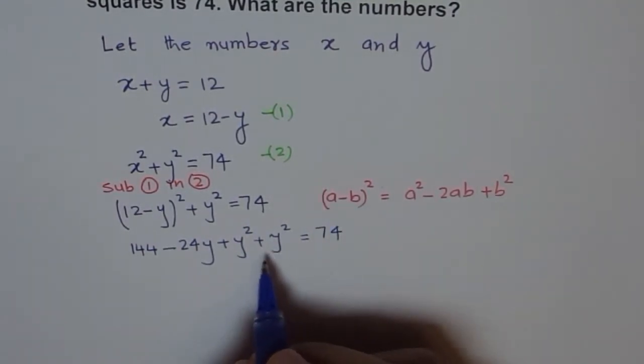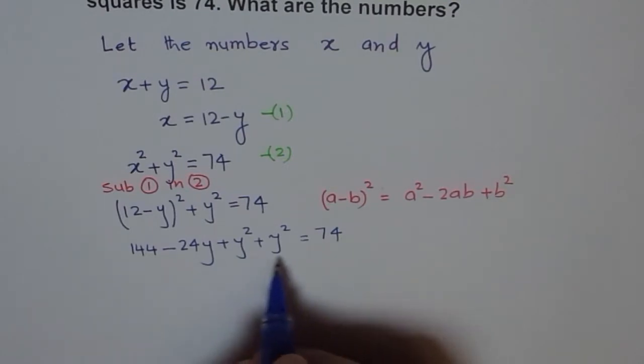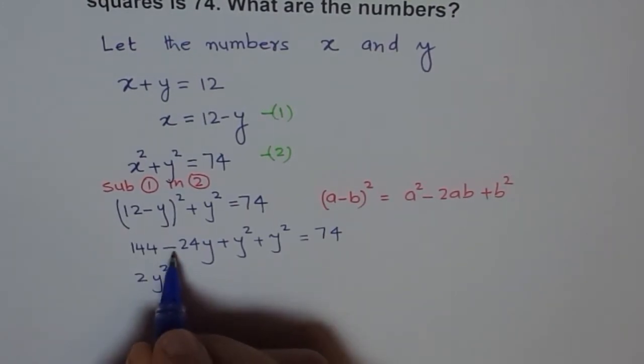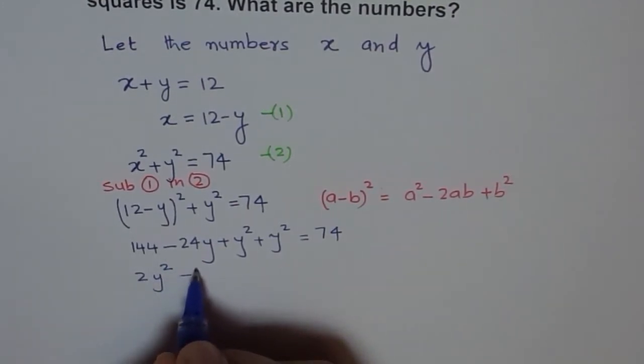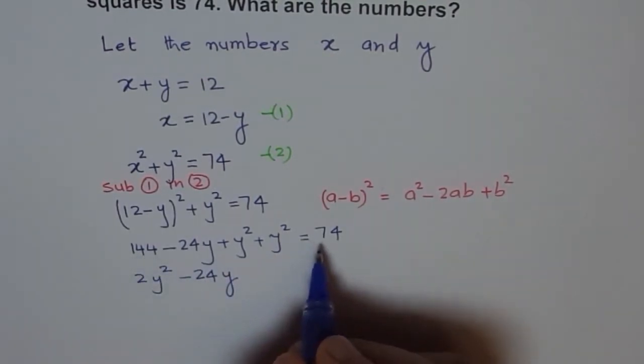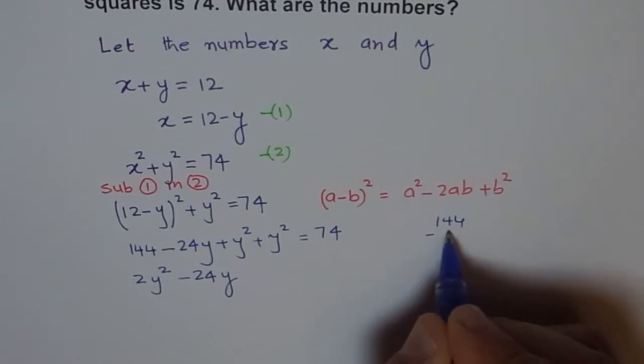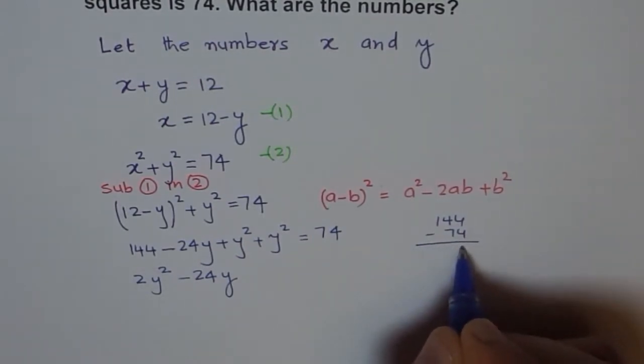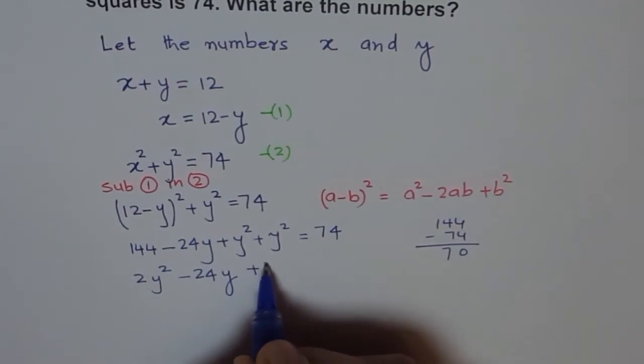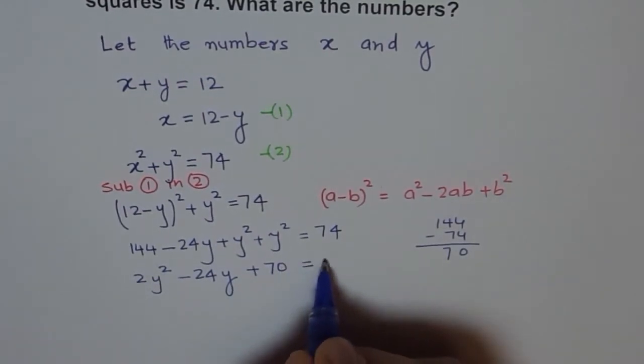Now, we can bring all the terms to one side and rearrange. So, here we have 2y square minus 24y and then we have 144 minus 74. So, we are left with 70. So, I will write plus 70 equals to 0.